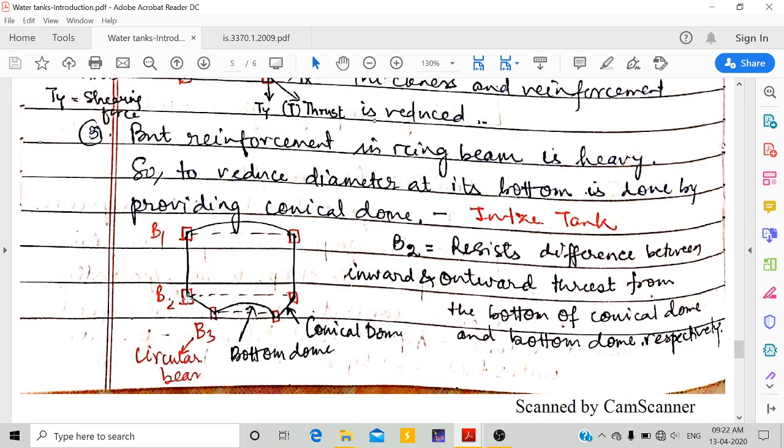This ring beam will be heavy. Now in order to reduce this heavy reinforcement, they plan to have a conical dome or conical slab and then the bottom dome. This is called Intze tank. To reduce the diameter at its bottom is done by providing a conical dome. B2 will resist the difference between the inward and outward thrust from the bottom of the conical dome.